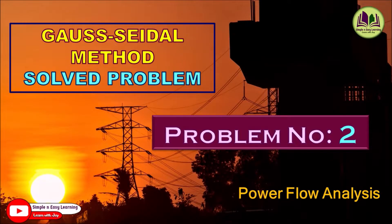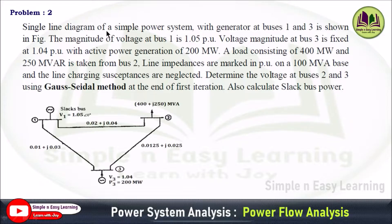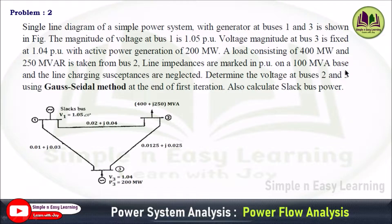Gauss-Seidel method, problem number 2. The single line diagram of a simple power system with generators at buses 1 and 3 is shown in the figure. The magnitude of voltage at bus 1 is 1.05 per unit. Voltage magnitude at bus 3 is fixed at 1.04 per unit with active power generation of 200 megawatt. The load consisting of 400 megawatt and 250 MVAR. Line impedances are marked in per unit on 100 MVA base. Line charging susceptances are neglected. Determine the voltage at buses 2 and 3 using Gauss-Seidel method at the end of first iteration, and also calculate slack bus power.